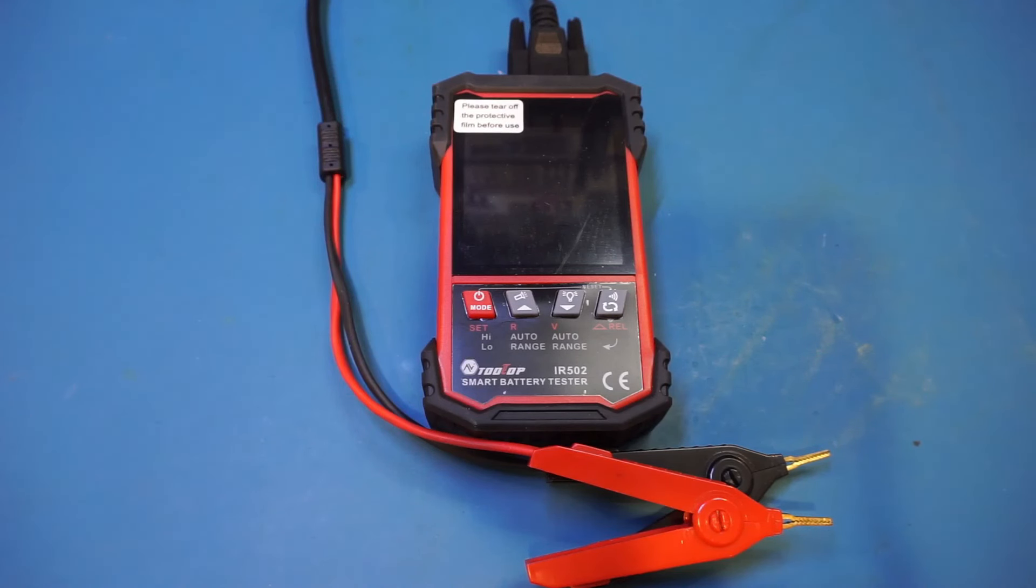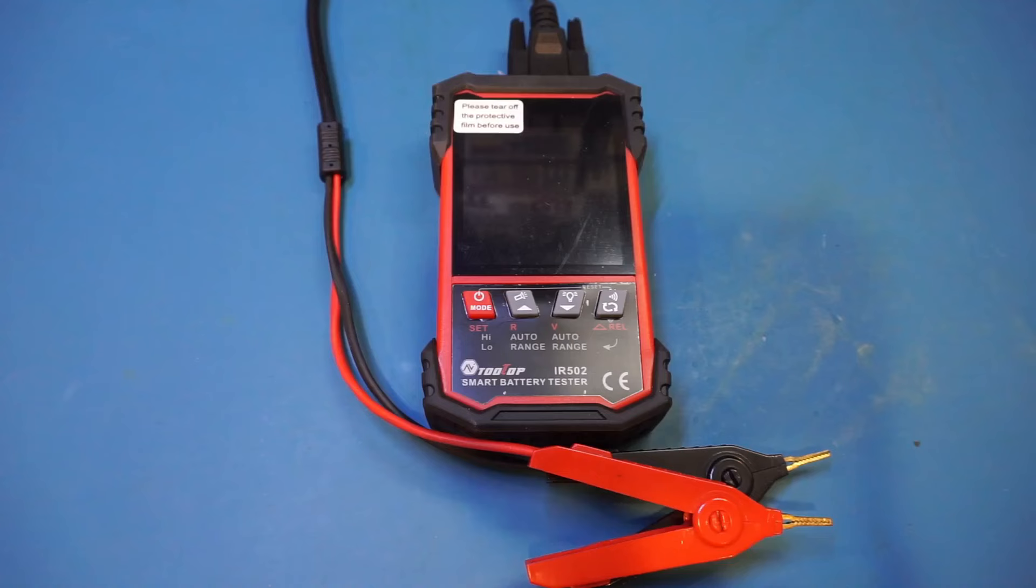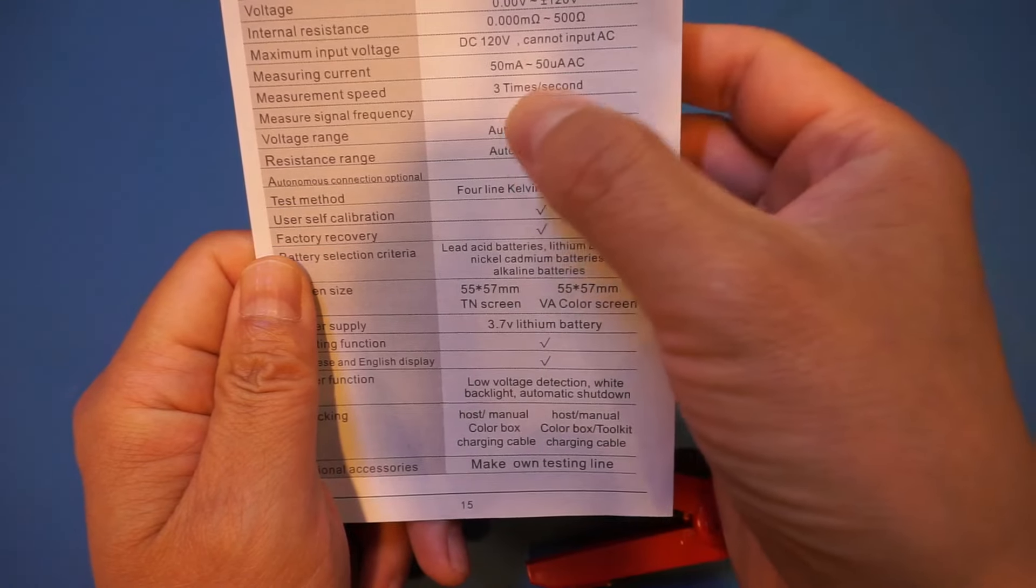Another method is the so-called AC conductance method. With this method, an AC signal with a frequency of around one kilohertz is typically used, and the battery's internal resistance is modeled as a complex impedance which includes elements of resistance, capacitance, and even inductance. This method is actually very similar to how an LCR meter measures capacitors' ESR or equivalent series resistance. Of course most LCR meters cannot measure components with significant DC bias, but this meter is specifically made for testing batteries. According to the product manual, this meter uses a one kilohertz AC signal for measurements, so I believe it uses the AC conductance method I mentioned earlier.